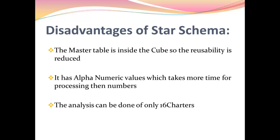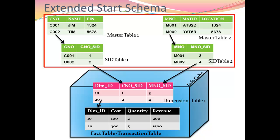To summarize: first, the master table is inside the cube, so reusability is reduced. Second, it has alphanumeric values which take more time for processing than numbers. Third, analysis can be done on only 16 dimensions. To overcome these problems, SAP came up with the extended star schema. We will see how extended star schema has resolved all the disadvantages that star schema has.